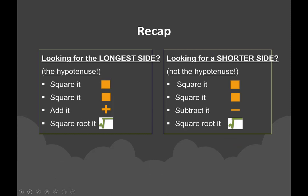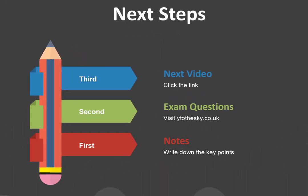Let's quickly recap. If you're looking for the longest side or the hypotenuse, you square both sides, add them together, and then square root the result. If you're looking for a shorter side that is not the hypotenuse, you square both, subtract the smaller side squared from the bigger side squared, and then square root it. I suggest you make a note of these now. Visit www.whythethesky.co.uk for exam questions on Pythagoras' Theorem and watch the next video by clicking the link. Mr. Mahmood — helping you do better in maths.